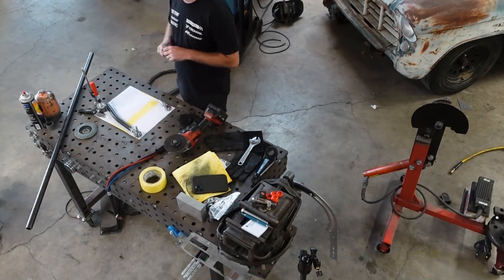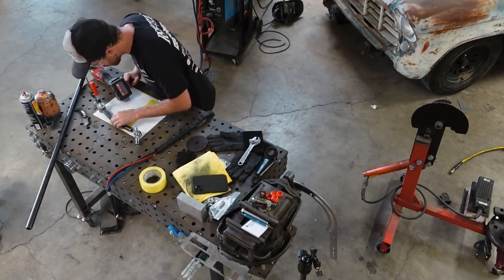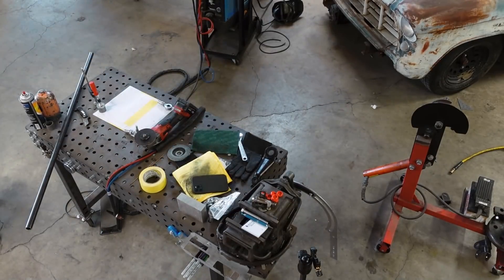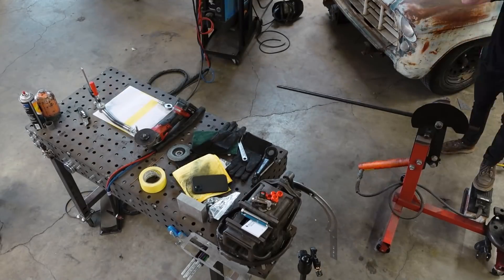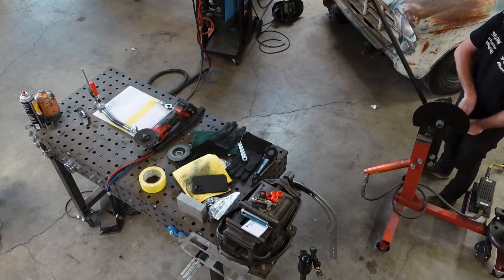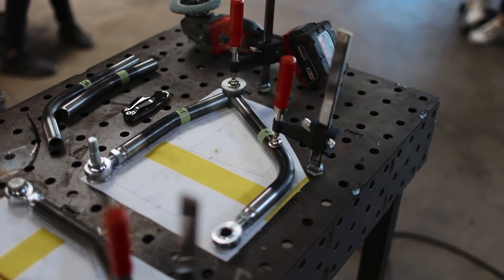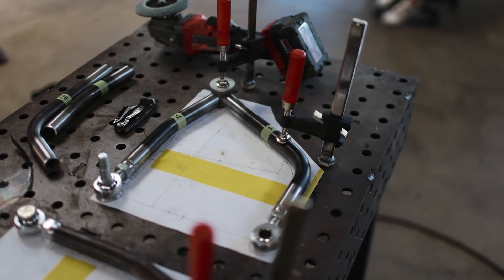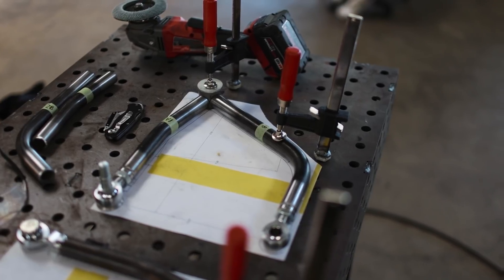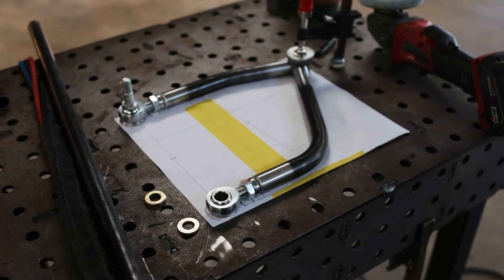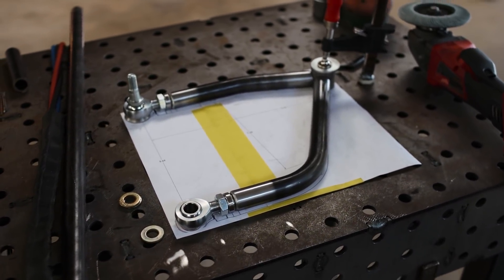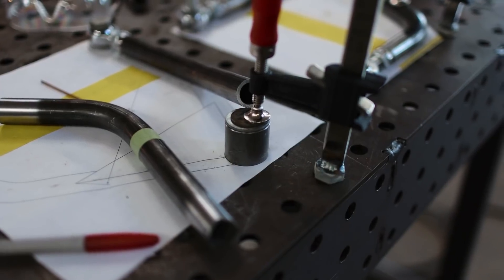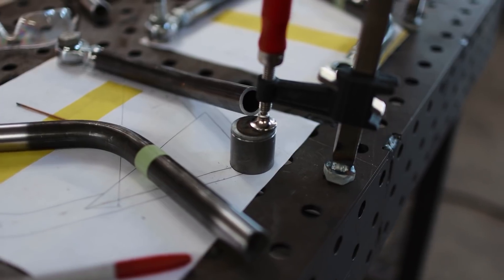And here you can see some control arms finally starting to take shape. These are just mocked up and set into place—they're not tacked together or anything—but it's a good proof of concept and I'm liking the direction this is going. You can really see how these things line up with the template underneath them and how that makes this entire process a lot easier to pull off.